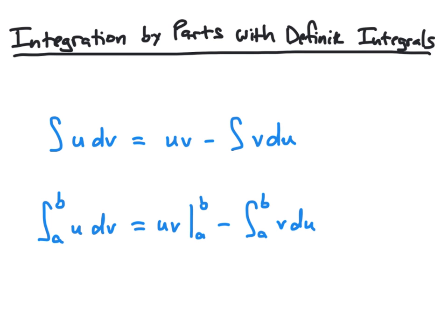We start by recalling the integration by parts formula for indefinite integrals, which says that the indefinite integral of u dv is going to equal uv minus the indefinite integral of v du.